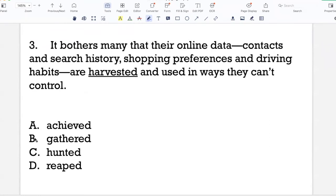It bothers many that their online data, contacts and search history, shopping preferences and driving habits are harvested and used in ways they can't control. So here we are talking about online users whose data is harvested, is used in ways that they can't control, data such as contacts, search history and preferences.